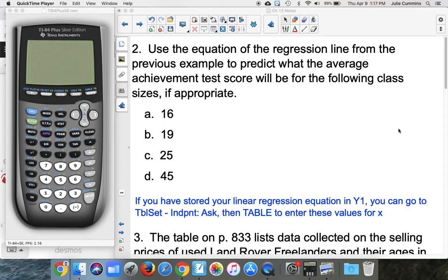Alright, for question number two, this says they want us to use the equation of the regression line from the previous example to predict what the average achievement test scores will be for the following class sizes, if appropriate.